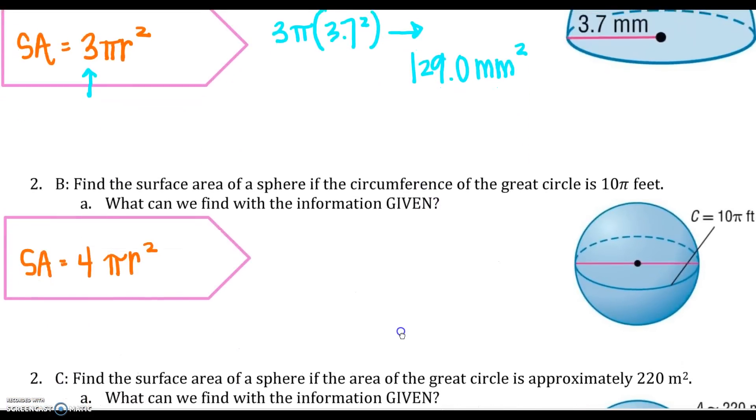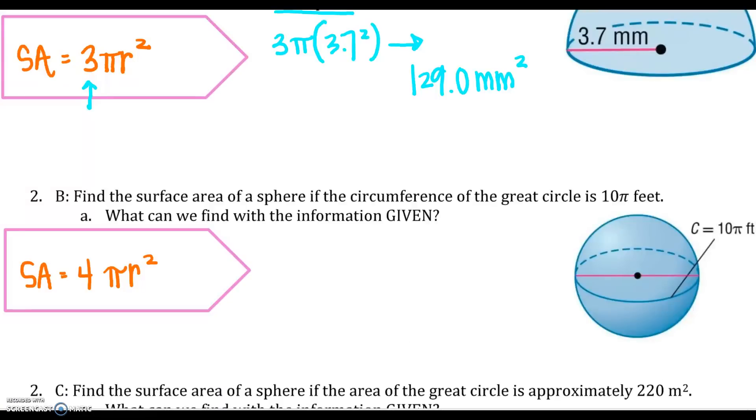Find the surface area of a sphere if the circumference of the great circle is 10π feet. What can we find with the information given? Well, we know a circle has an area formula of πr². There's a few different ways you could do this if you wanted to. Because the great circle is just a 2D object, if it was me, my first thought would tell me to do 10π equals πr². And then I am going to find my radius. So I would divide both sides by π. 10 equals r².